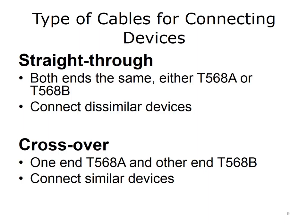Certain types of twisted pair cables are used for making connections between devices. Straight-through cables are used to connect dissimilar devices, like a computer to a hub or switch — both ends are the same, either T568A or T568B. Crossover cables are used to connect similar devices, like a computer to a computer — one end is T568A and the other end is T568B, where pins 1 and 3, and 2 and 6, are swapped.